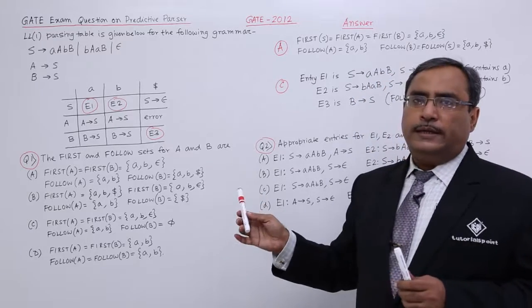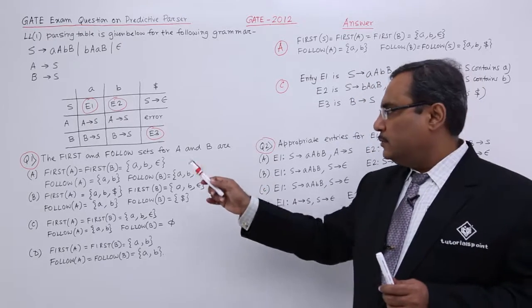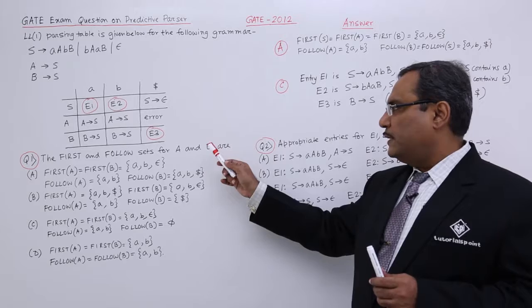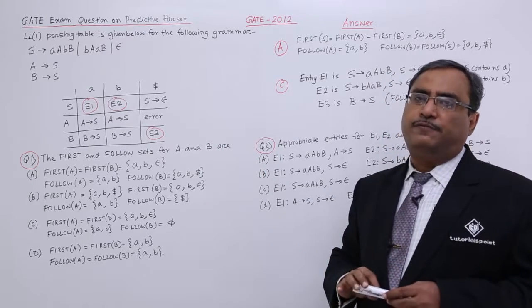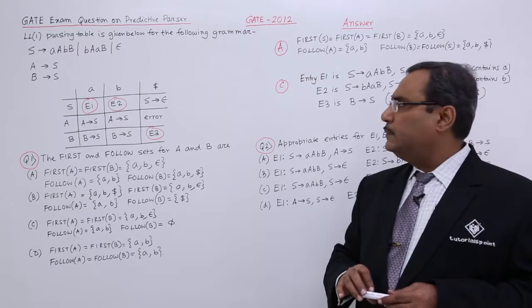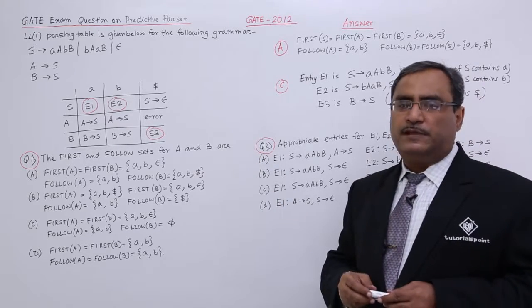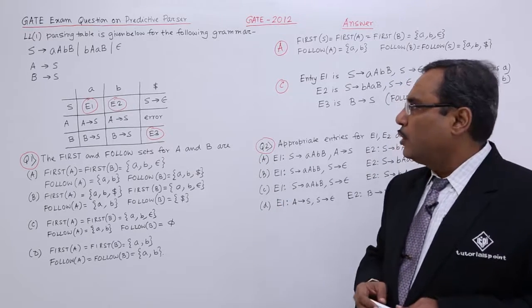This is a linked question. It is having two questions. The first and follow sets for A and B are. At first we are supposed to calculate the first and follow of A and B. They are not requiring to calculate the first and follow for S.